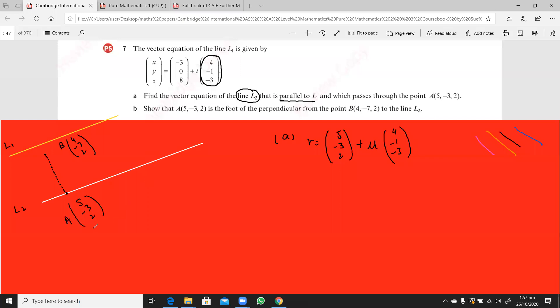So remember all those steps. So we will just suppose that this point A is, since it is on the line L2, can I say this OA is 5 plus 4 mu, minus 3 minus mu, and this is 2 minus 3 mu. That is my OA.